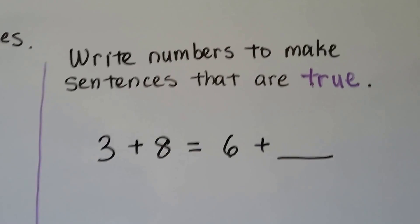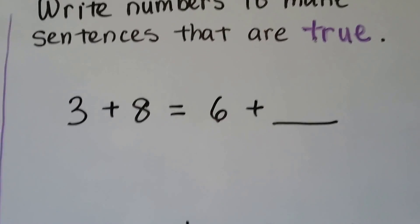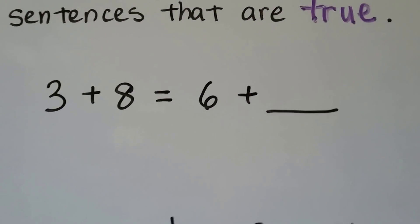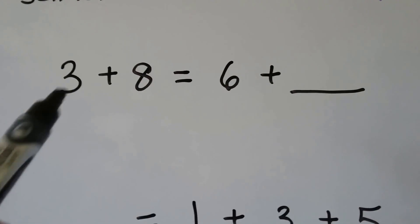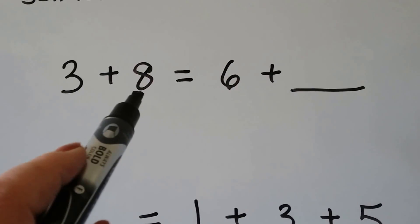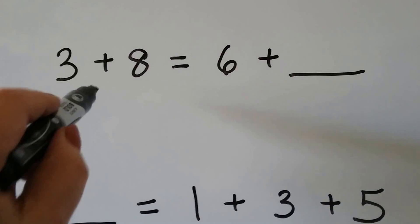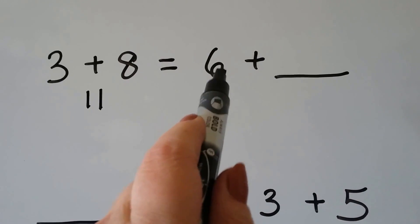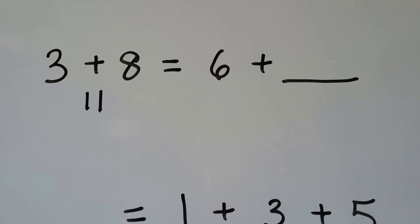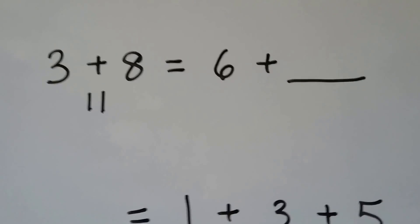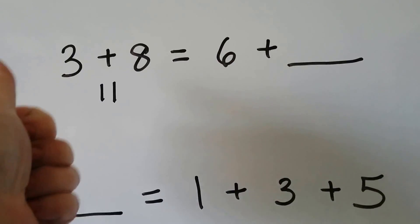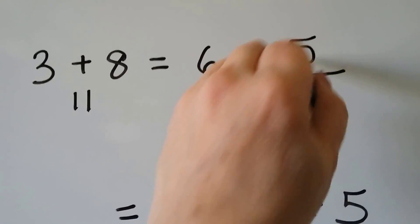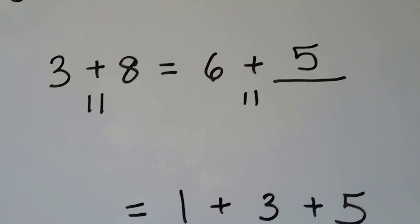Write the numbers to make the sentences that are true. 3 plus 8 is equal to 6 plus something — we need to find the unknown number. What is 3 plus 8? We start at the 8 and count on 3: 8, 9, 10, 11. We need to put a number here that added to 6 is going to make an 11. We can start at 6 and count up to 11: 6, 7, 8, 9, 10, 11 — that would be a 5. Then this side would equal 11 and that would make it true.